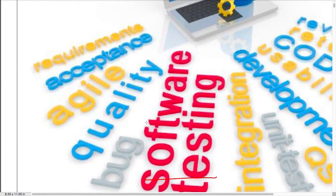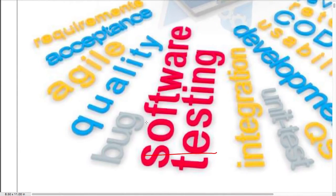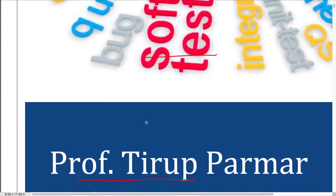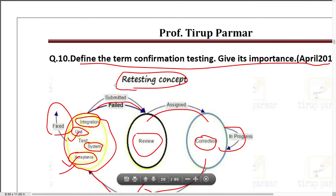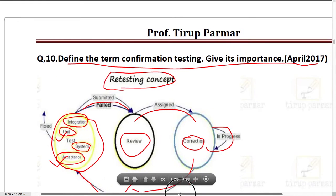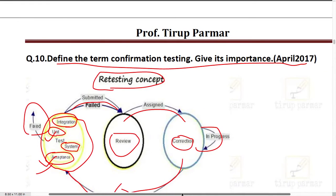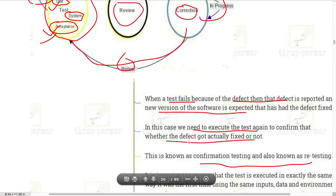Welcome back to the lecture series on software testing. My name is Professor Tirup Parmar. We are discussing analysis of university papers from October 2012 till April 2017 for TYBSIT Semester 5. In the last lecture we already discussed confirmation testing, which was asked in April 2017 — the last KT exam. Now let's continue to the next question.